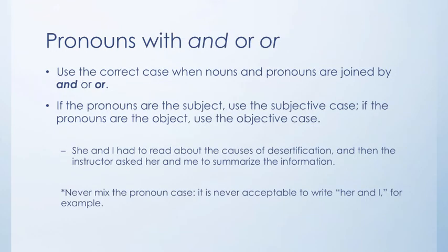Pronouns with and or or: use the correct case when nouns and pronouns are joined by and or or. If the pronouns are the subject, use the subjective case; if they are the object, use the objective case. For example: She and I had to research the causes of desertification, and then the instructor asked her and me to summarize the information. As a side note, never mix the pronoun case — it's never acceptable to say her and I.